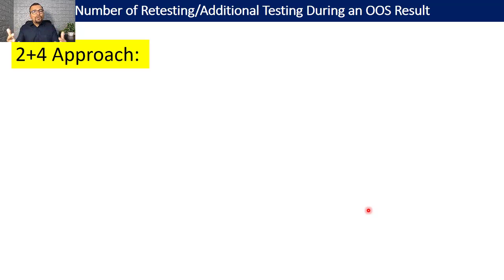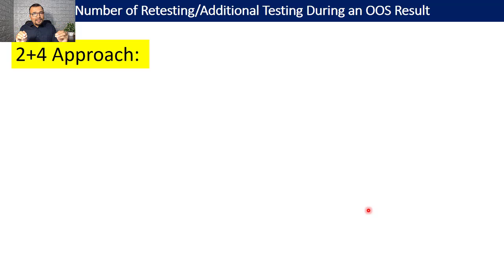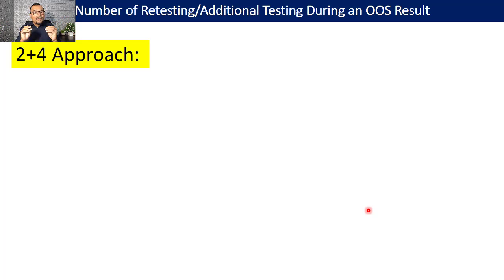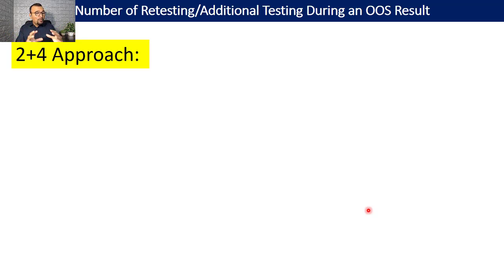Once you conclude there is no root cause identified — both by the analytical lab and by the manufacturing site — please understand that additional testing can only be conducted once the entire investigation from both the laboratory and manufacturing site is completed and concluded with no root cause or unknown root cause.